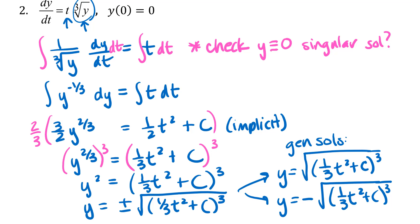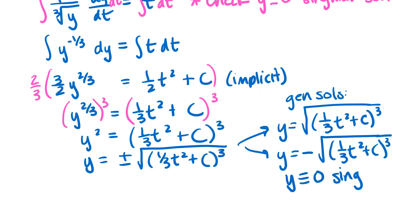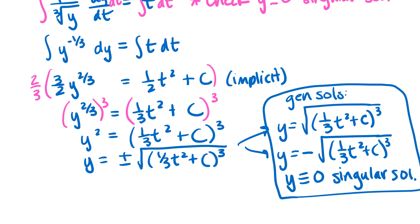Now for the singular solution: does y equals zero (the constant function) arise from the general solution for any particular choice of c? Since c can be any constant, there is no choice of c that would make either general solution equal to y equals zero. So y equals zero is indeed a singular solution. In total we have two different general solutions and one singular solution.